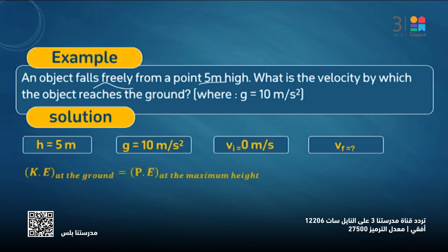So kinetic energy at the ground equals potential energy at maximum height. The same idea - kinetic energy will be equal. Potential at maximum, kinetic at the ground.